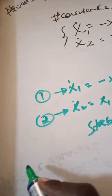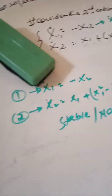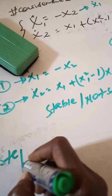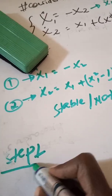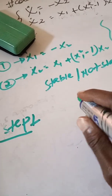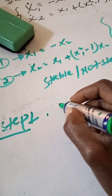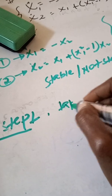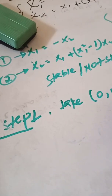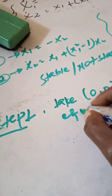Let's start with whether it is stable or not — we have to prove it. In step one, to determine if the given system is stable or not, you have to find the equilibrium point. Take the equilibrium point at (0, 0).